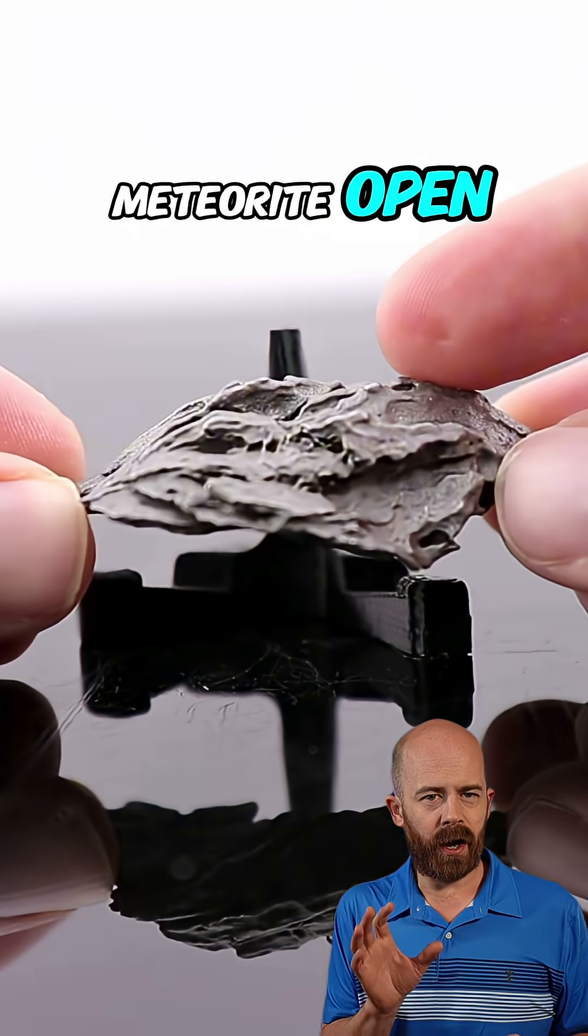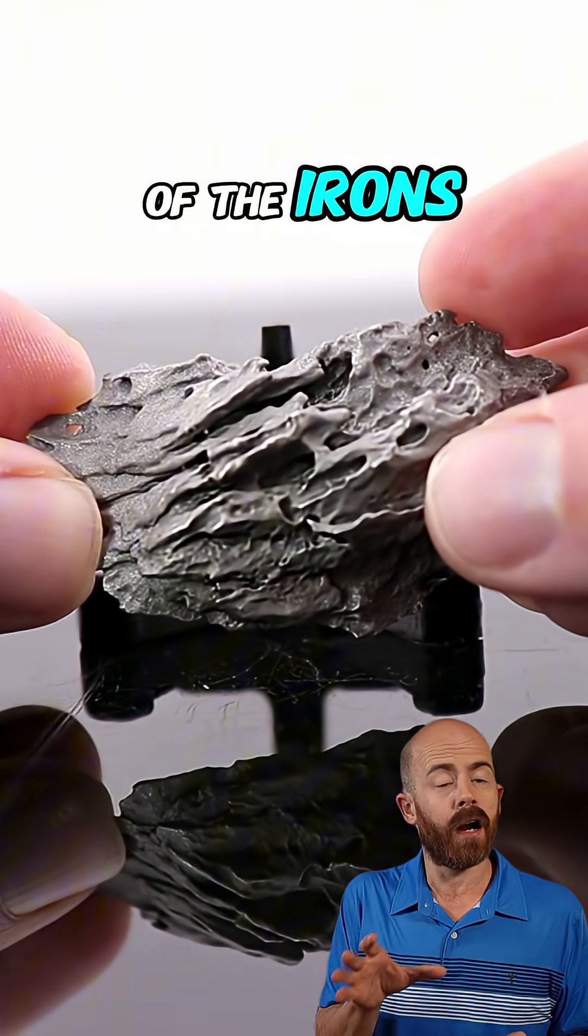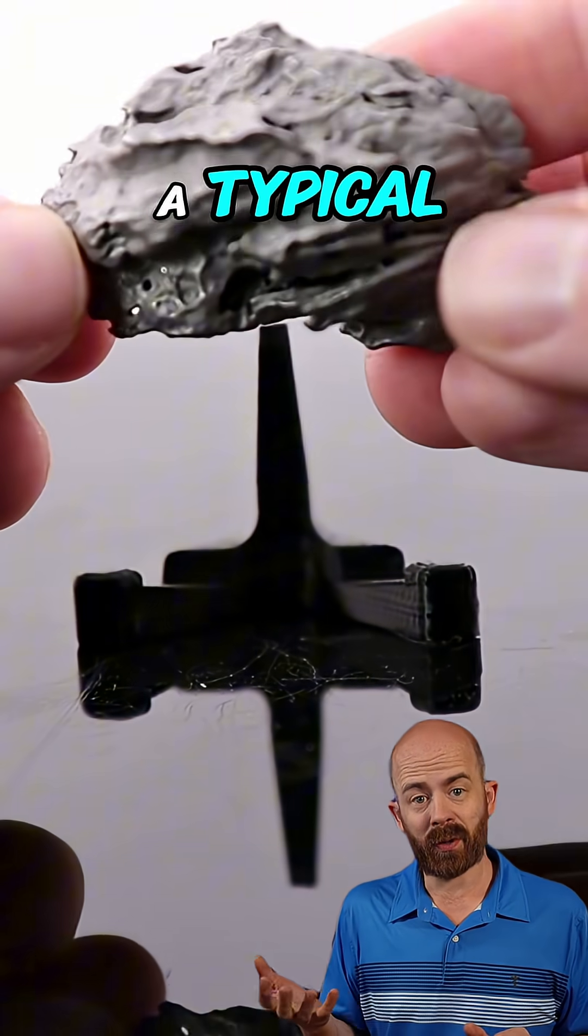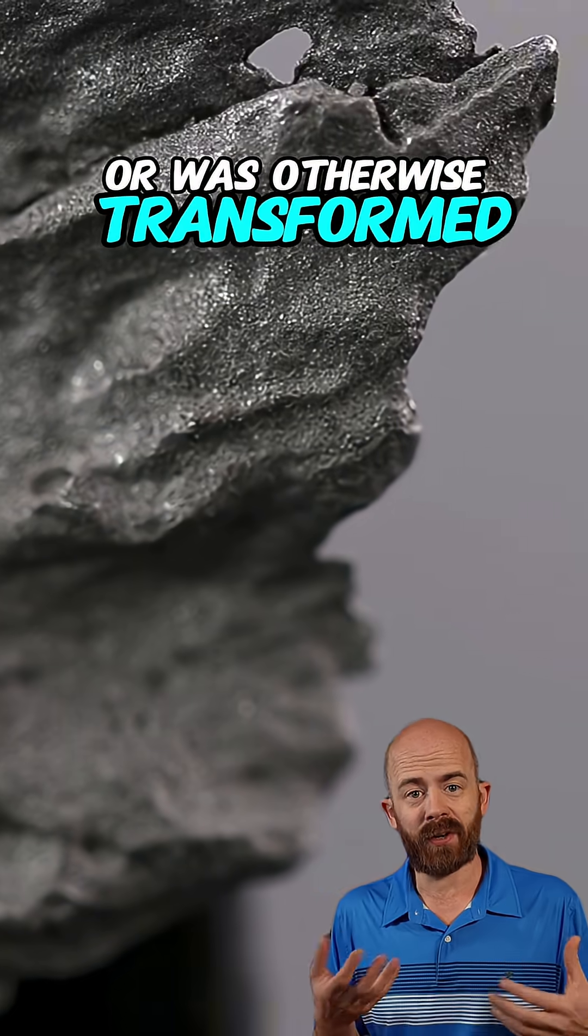When you slice the Dronino meteorite open, you don't get the classic Widmanstätten pattern that you see in many of the irons that I've shown you on my channel. Instead, Dronino's internal structure is atypical, showing it never cooled like other iron meteorites or was otherwise transformed.